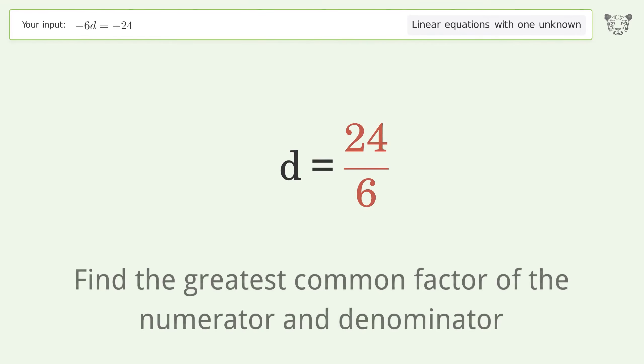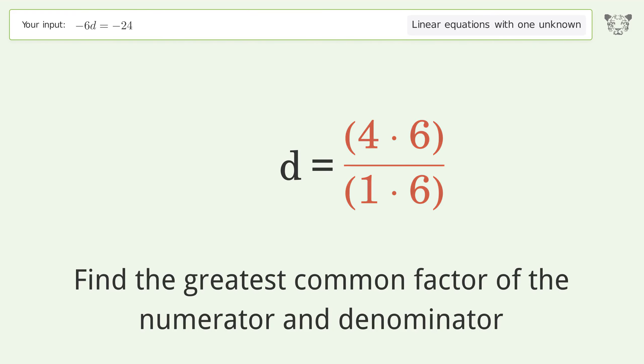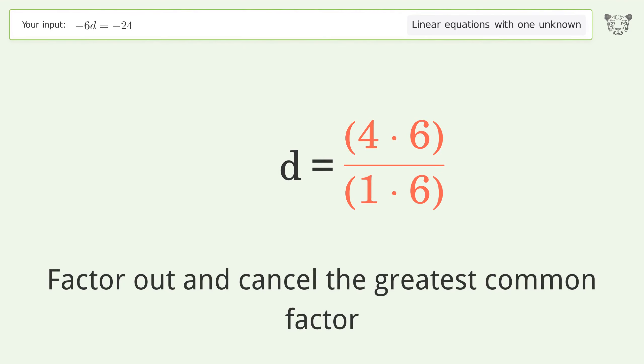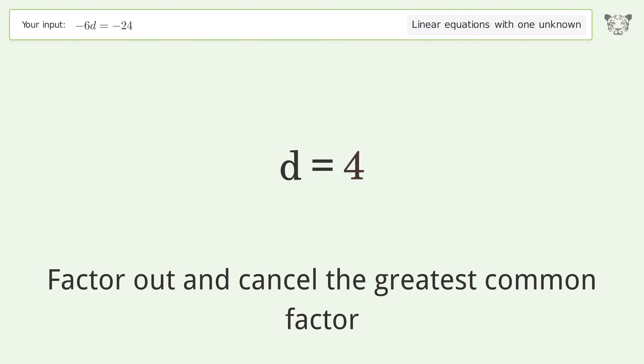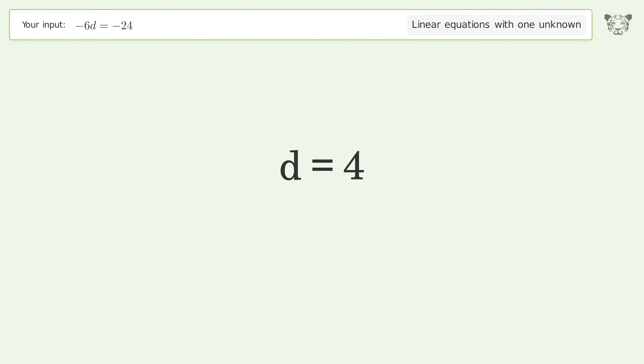Find the greatest common factor of the numerator and denominator. Factor out and cancel the greatest common factor. And so the final result is d equals 4.